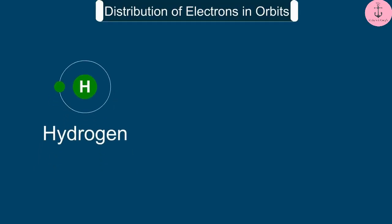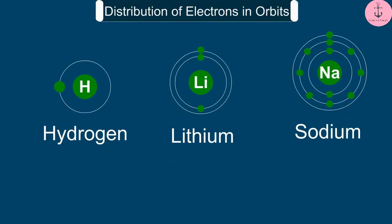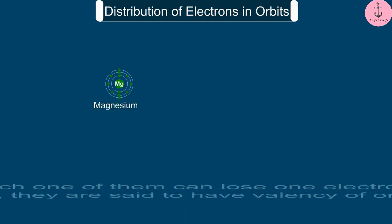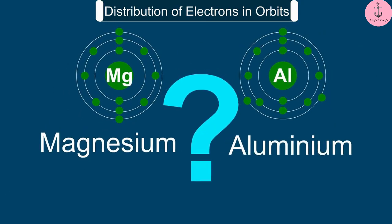Hydrogen, lithium, and sodium atoms contain 1 electron each in their outermost shell. Therefore, each one of them can lose 1 electron. So, they are said to have a valency of 1.